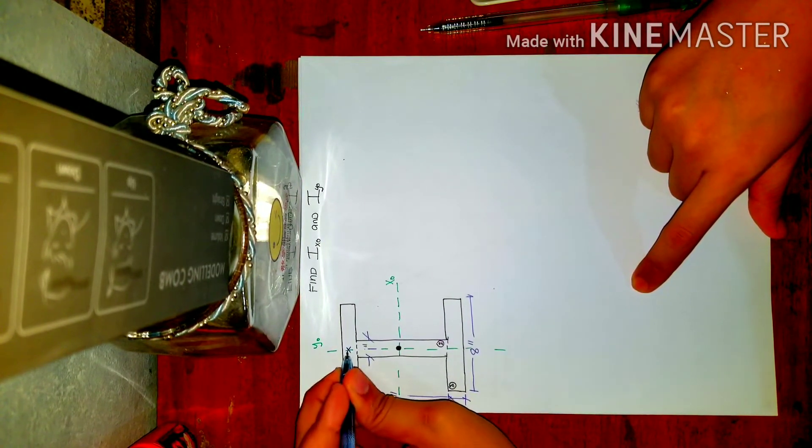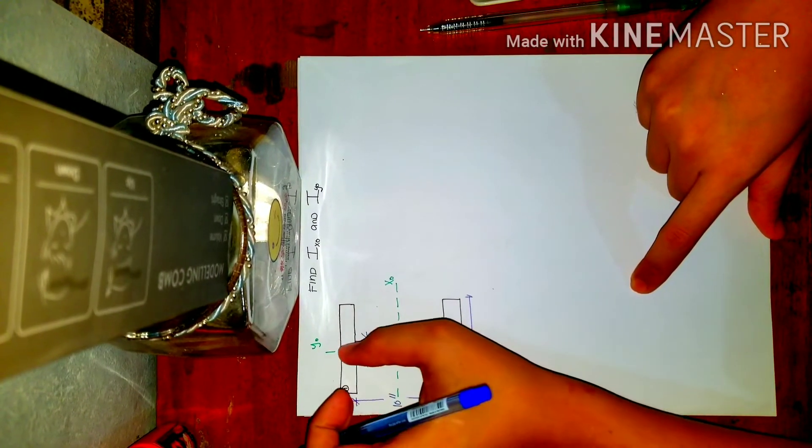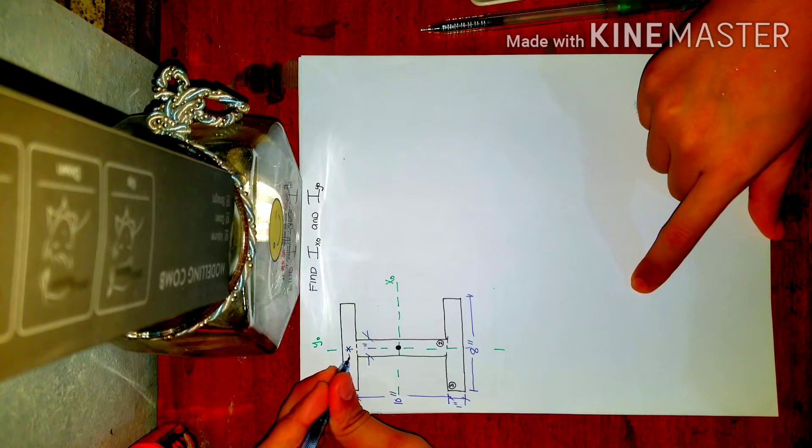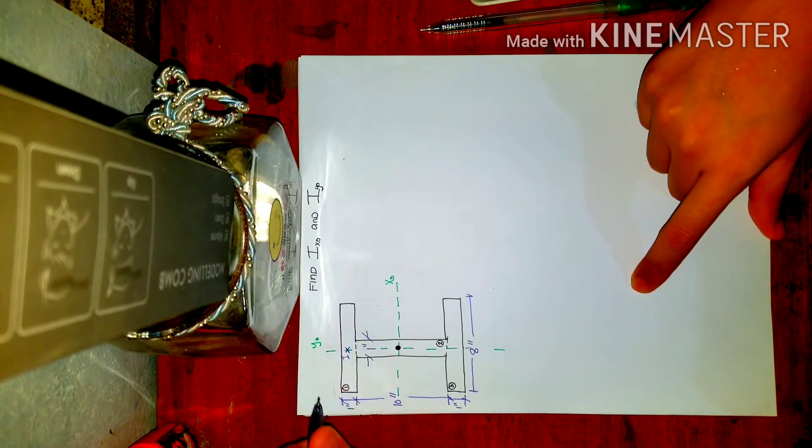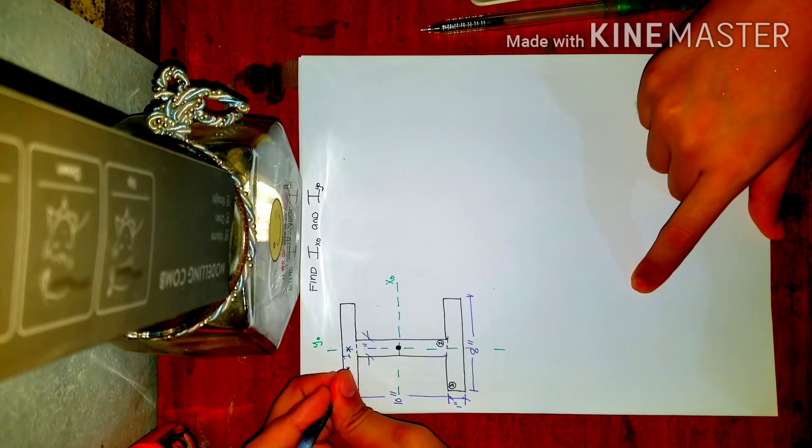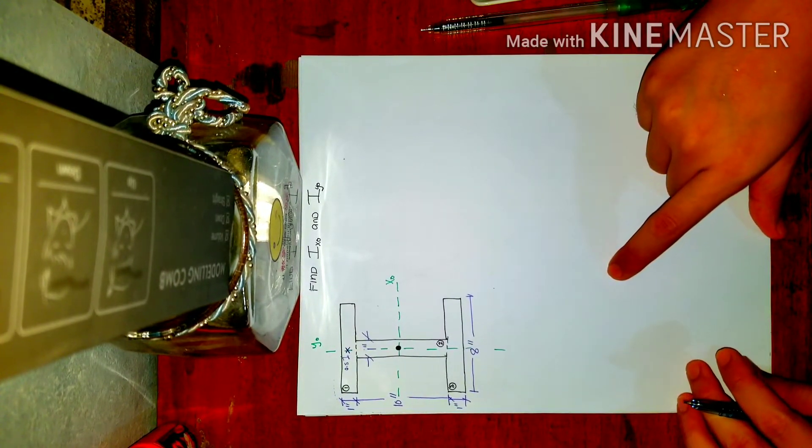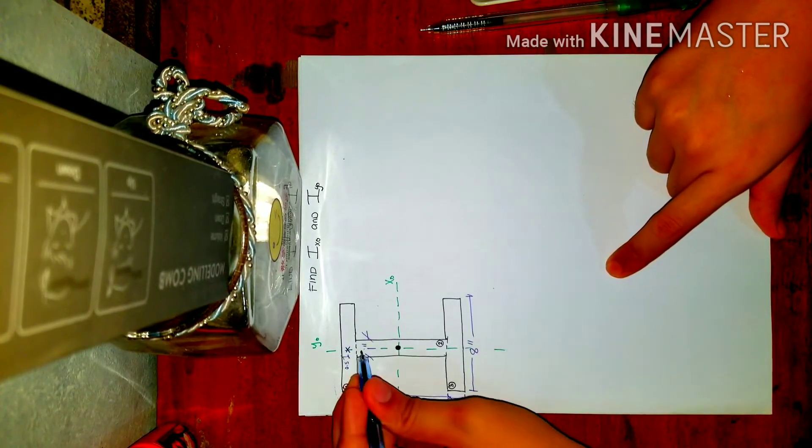So I'll mark it with an x. This is half of your 8. So if this is 1, therefore this is 0.5. Next, how about the centroid for the second rectangle?